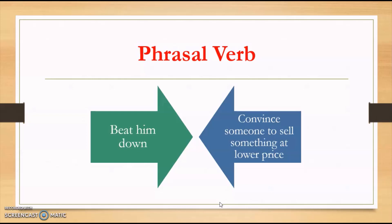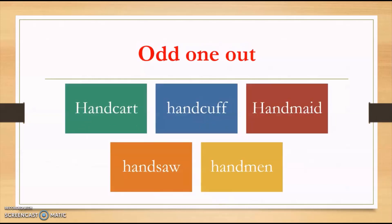The last question here is odd one out. It means there are few words given where one of the words does not make any sense. You can also consider it as a collocation, for example compatibility of two words together. You can say handcart, handcuff, handmade, handsaw, but you cannot say handmen. So handmen is the odd word here.